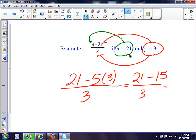Then we still need to simplify on the top. On the top, we have 21 minus 15. When I subtract that, I get 6, and I still have over 3.